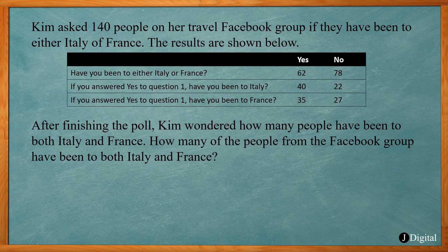On our first ACT math question, Kim asked 140 people on her travel Facebook group if they've been to either Italy or France. The results are shown below. Have you been to either Italy or France? 62 said yes, 78 said no.